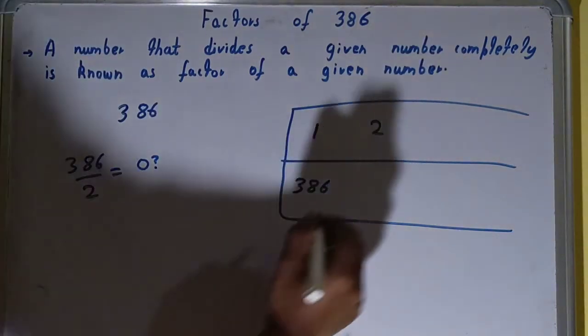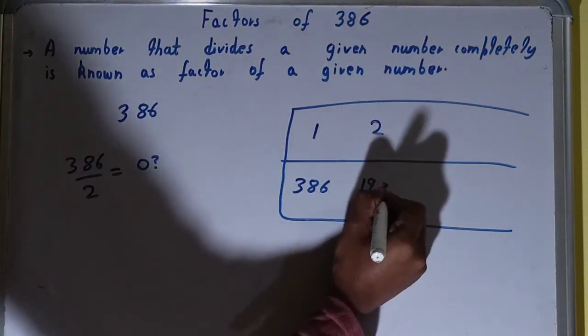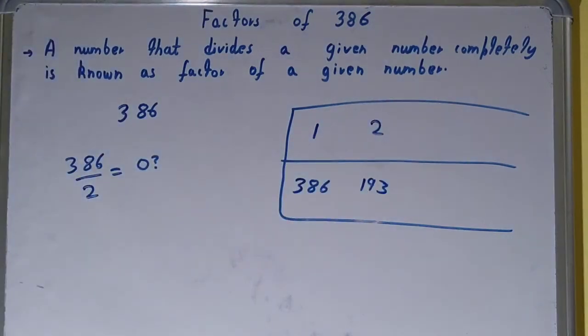2 into 19 is 38, 2 into 3 is 6, so it will be 193 times. So 2 is a factor and 193 will also be the factor.